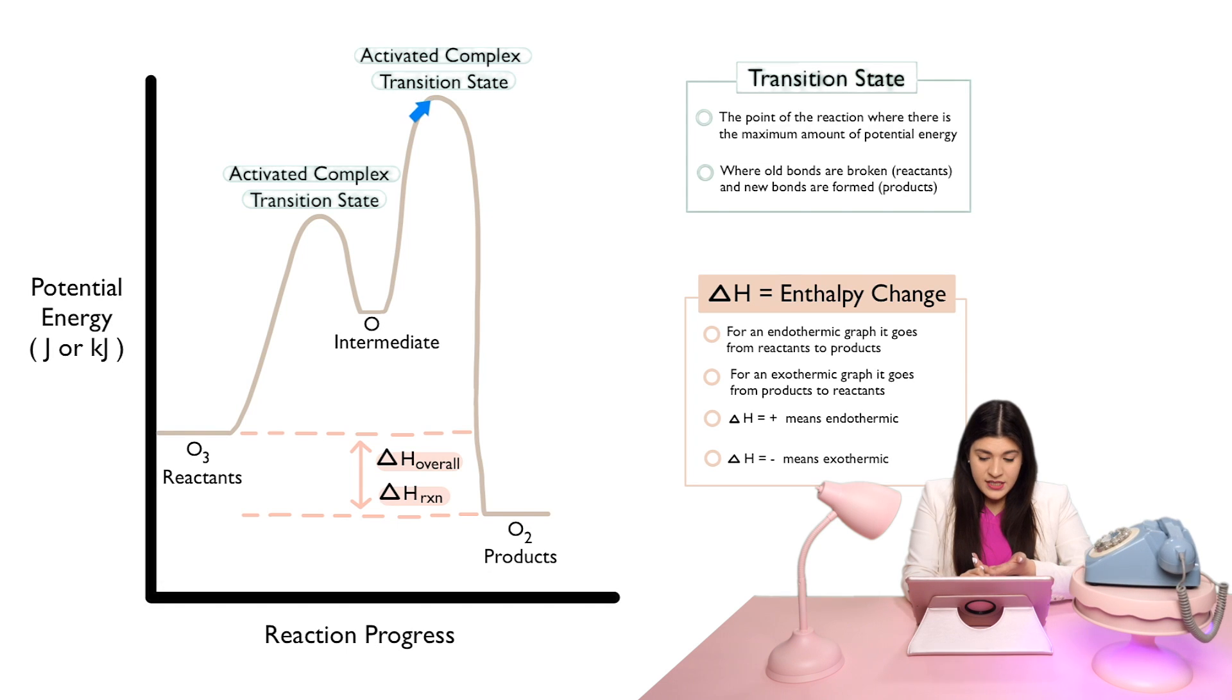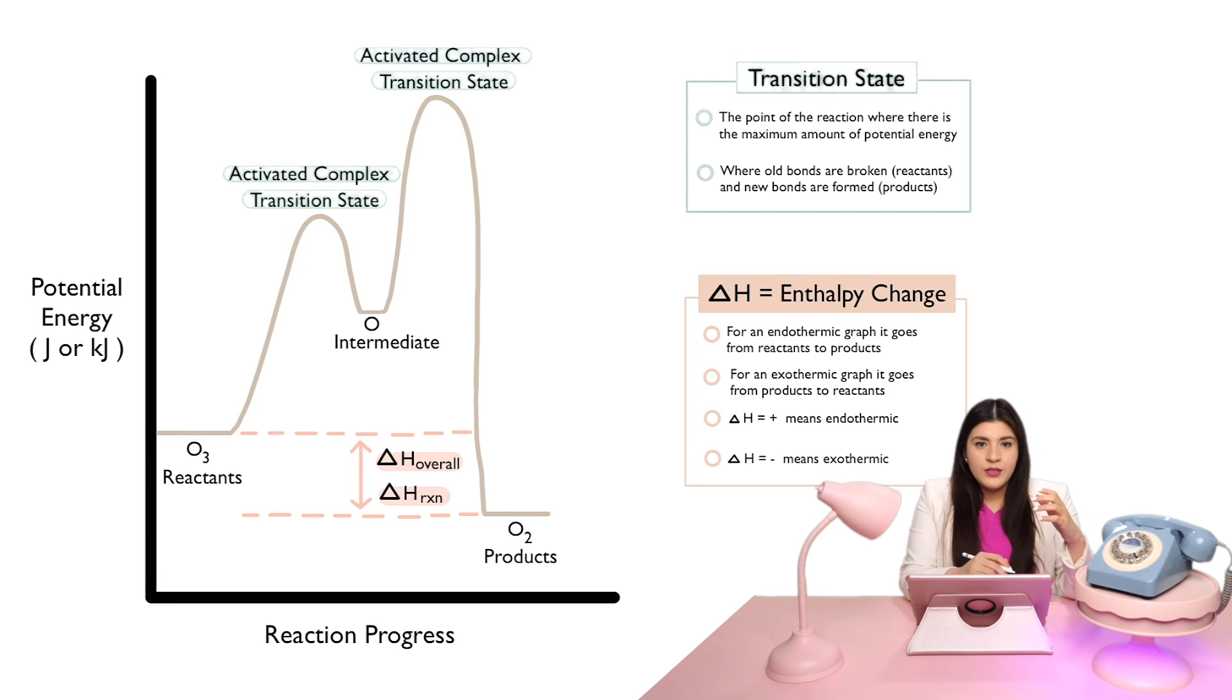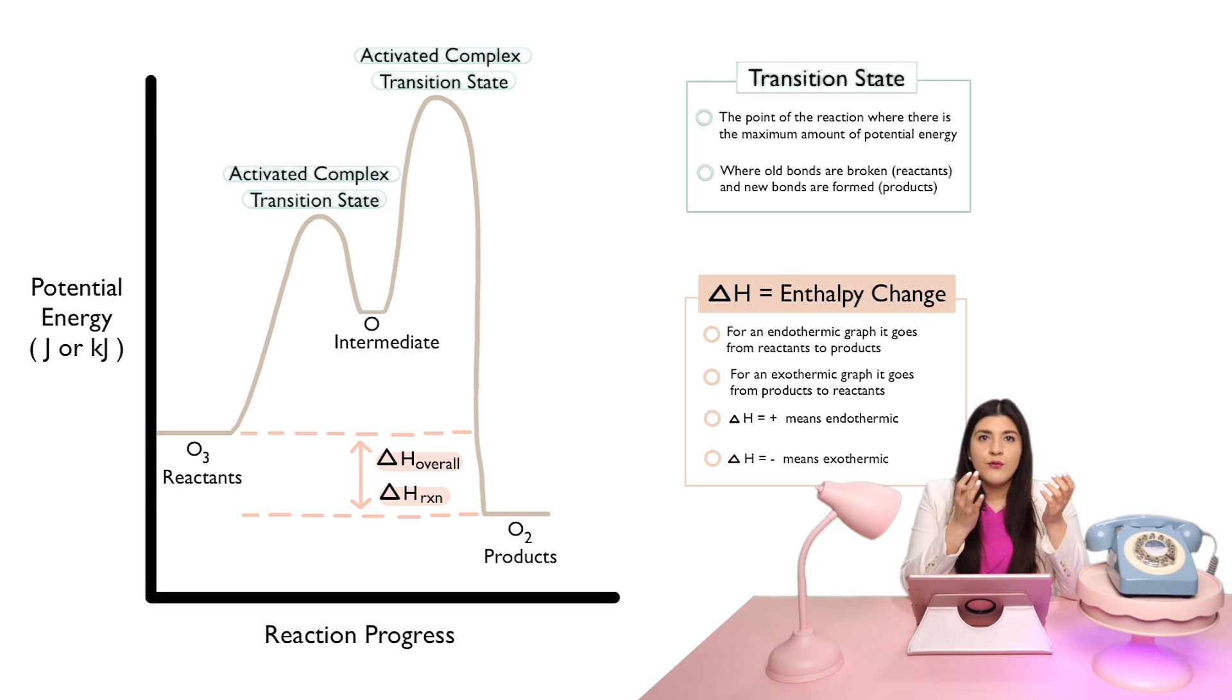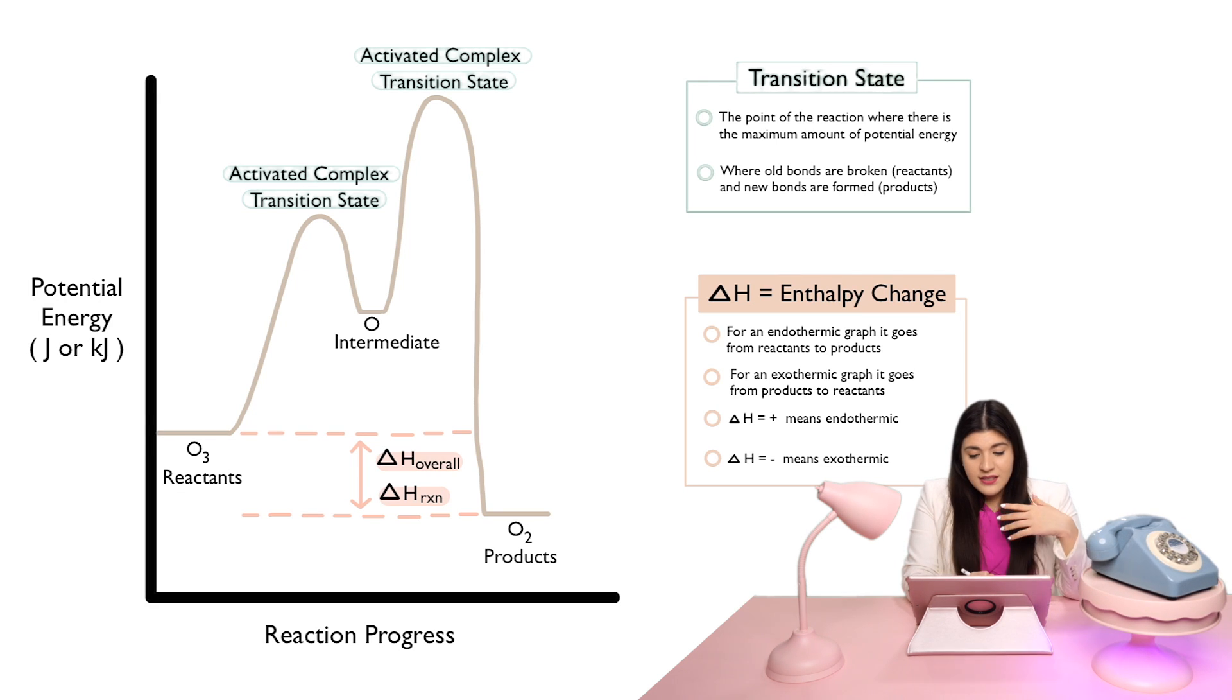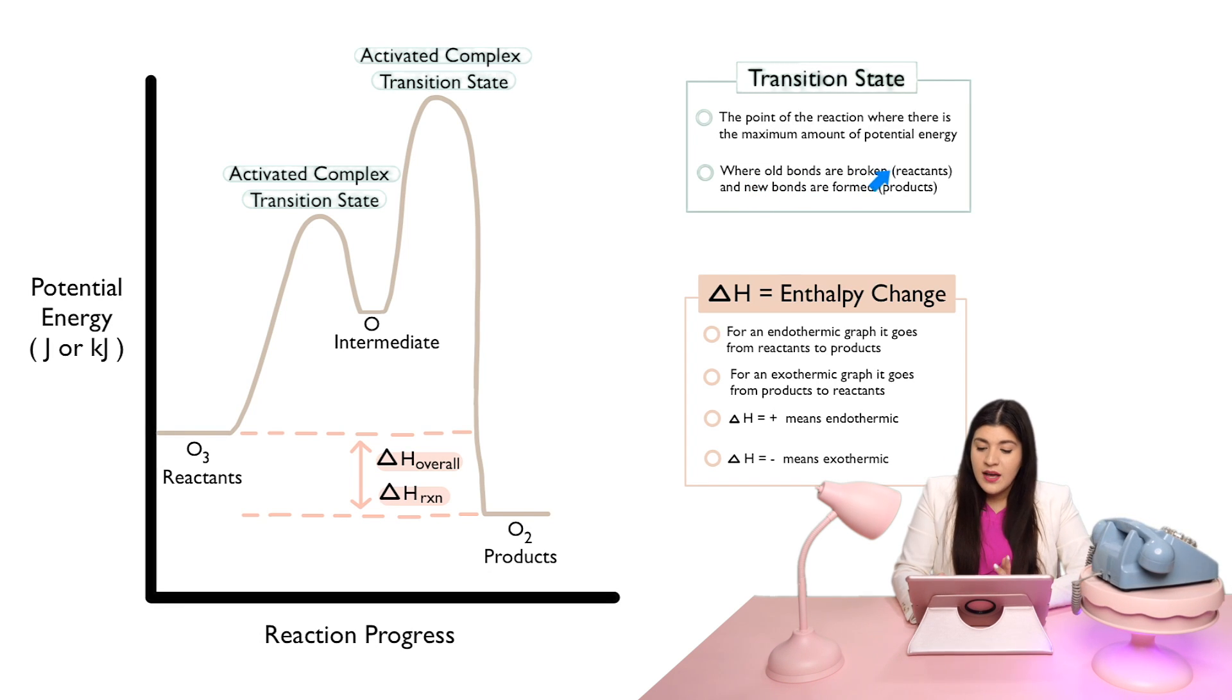And then I also want you to think of the reason why we have these transition states is because we're getting to different points where the way we could even form a new product or go from reactants to products is by breaking bonds and forming new ones. So, that's essentially what our transition states or our activated complexes are allowing us to see. They're telling us where our old bonds are broken, so the reactants are broken, and where the new bonds products are being formed.